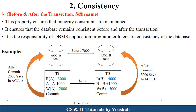The next property is Consistency. Consistency simply means that before and after the transaction, the values in the database must be the same. This is called the consistency property — it ensures integrity constraints. Now focus on these two databases: Account A has 3000 rupees and Account B has 4000 rupees. So before the transaction, there are a total of 7000 rupees.